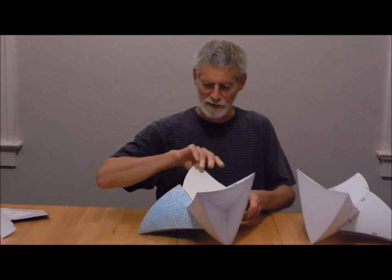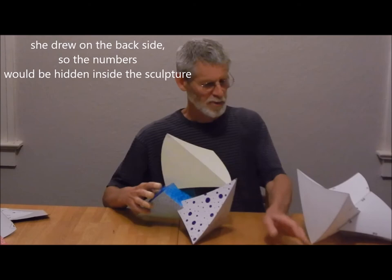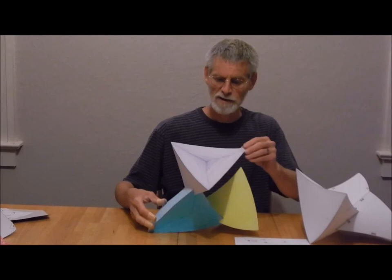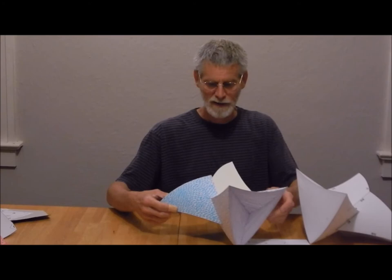One option that my wife tried, which is actually a fairly simple process that gives a good result, is prior to assembling the sculpture, she drew on the pattern with felt tip markers and made a variety of colors and patterns on it, and then assembled it. Since the tape is clear, it lets her drawing show through that. So that's a fun, easy way to do it.